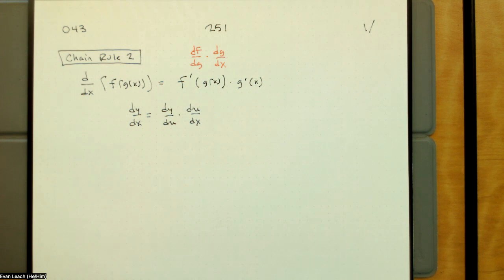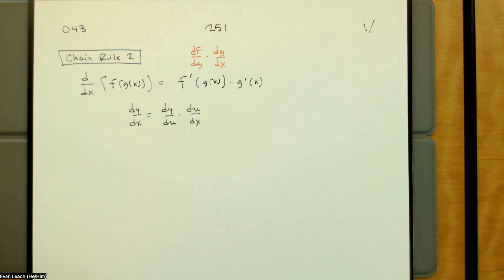Another thing to notice is that we are already familiar with this rule where you multiply the rates. If you want to figure out the number of inches in a yard, you take the number of inches per foot and multiply by the number of feet per yard.